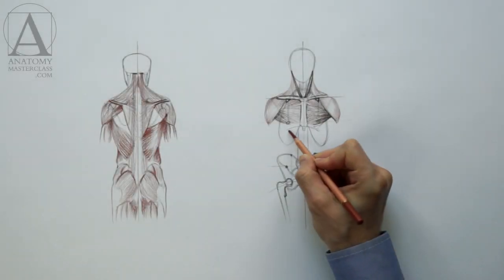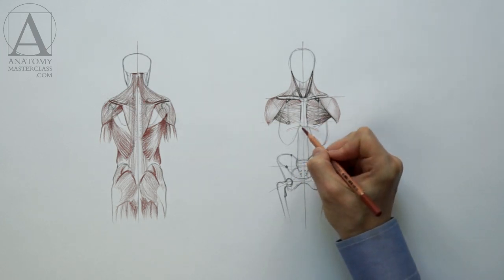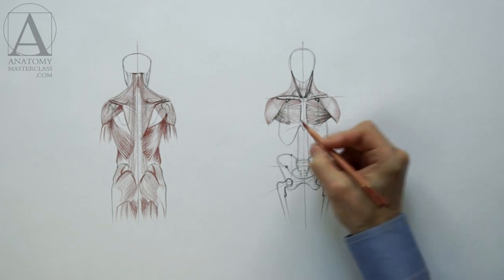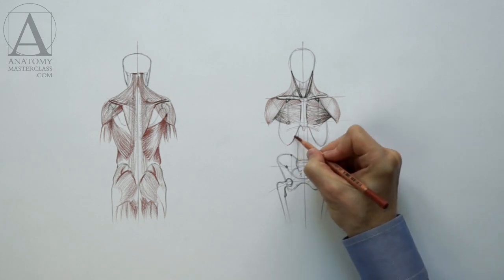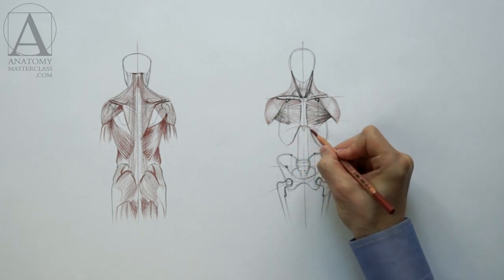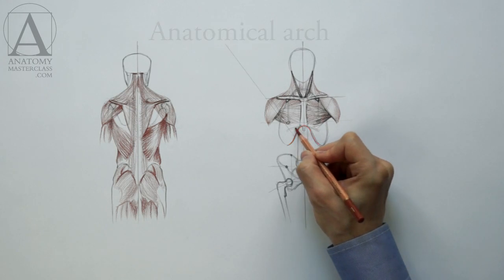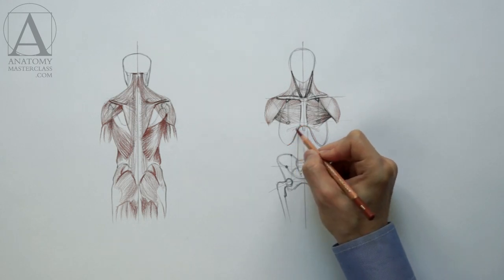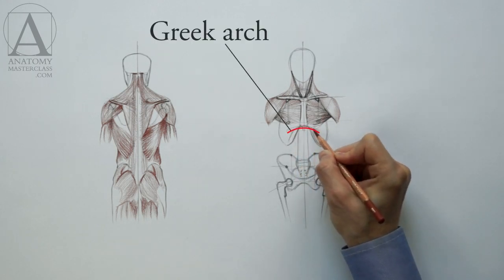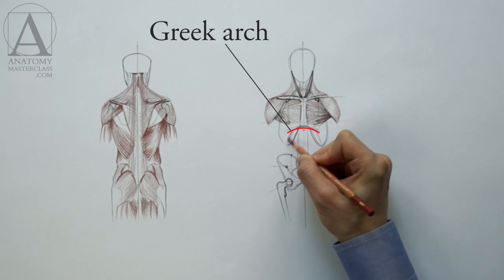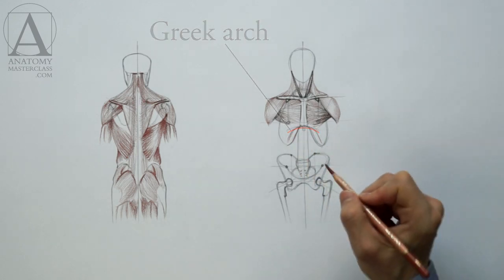In anatomy, we can distinguish two different arches: the arch of the ribcage and the abdominal arch. One arch is formed by the costal cartilage of the ribcage and is called the skeletal or anatomical arch. The other arch is formed by abdominal muscles and is called the Greek arch or abdominal arch.